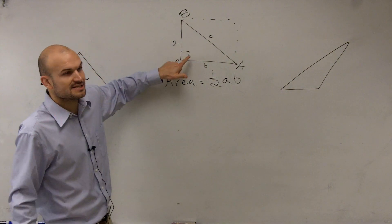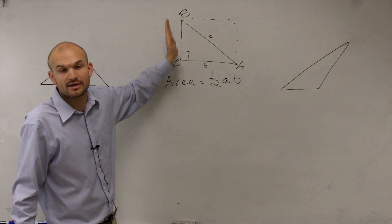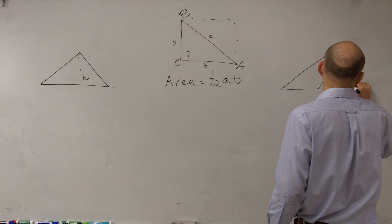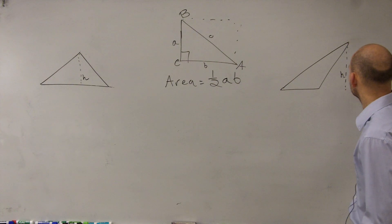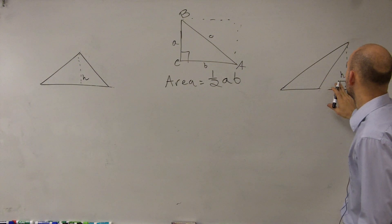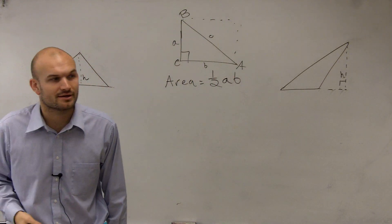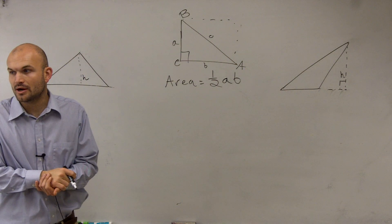So in this case, we know our height is A because we have a right triangle, and we have a right angle, so we're going to have perpendicular lines. But in both of these two cases, we need to be able to determine what exactly our height is going to be.